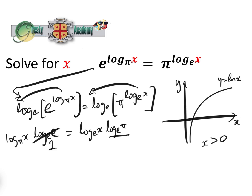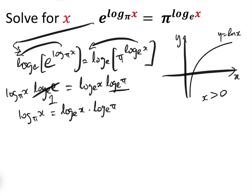Now log_e(e) is just 1, so we have log_pi(x) equals log_e(x) times the constant log_e(pi).